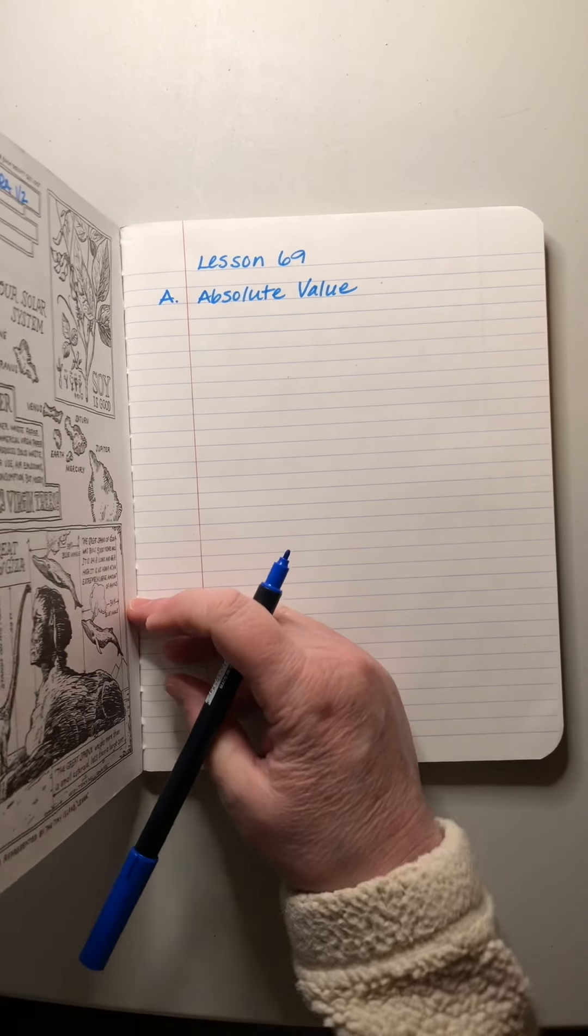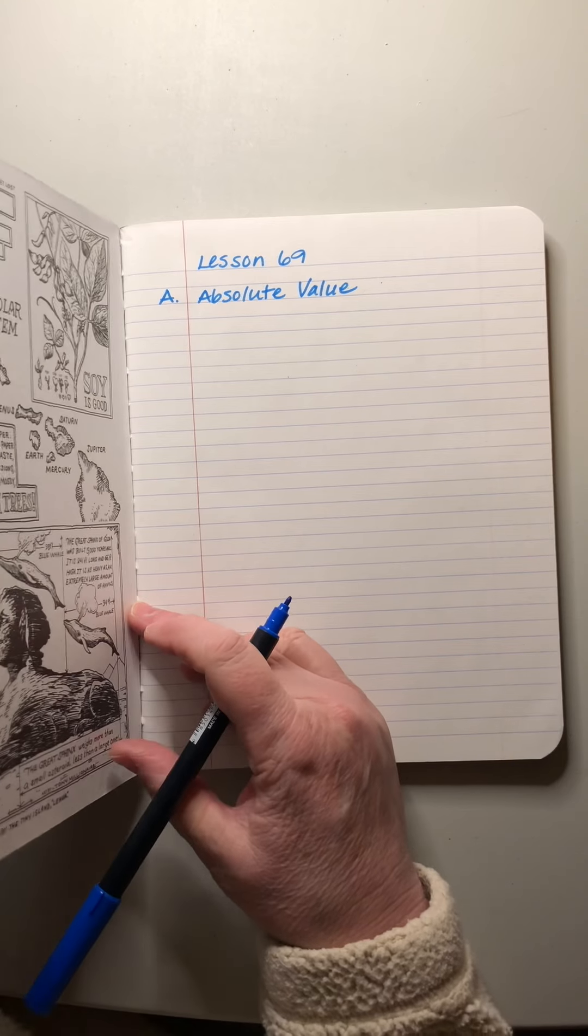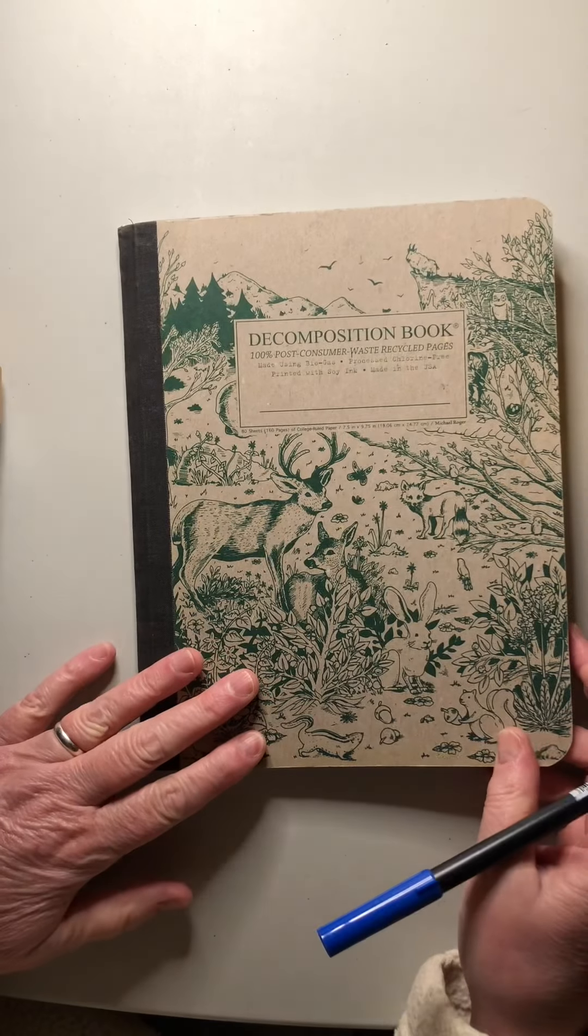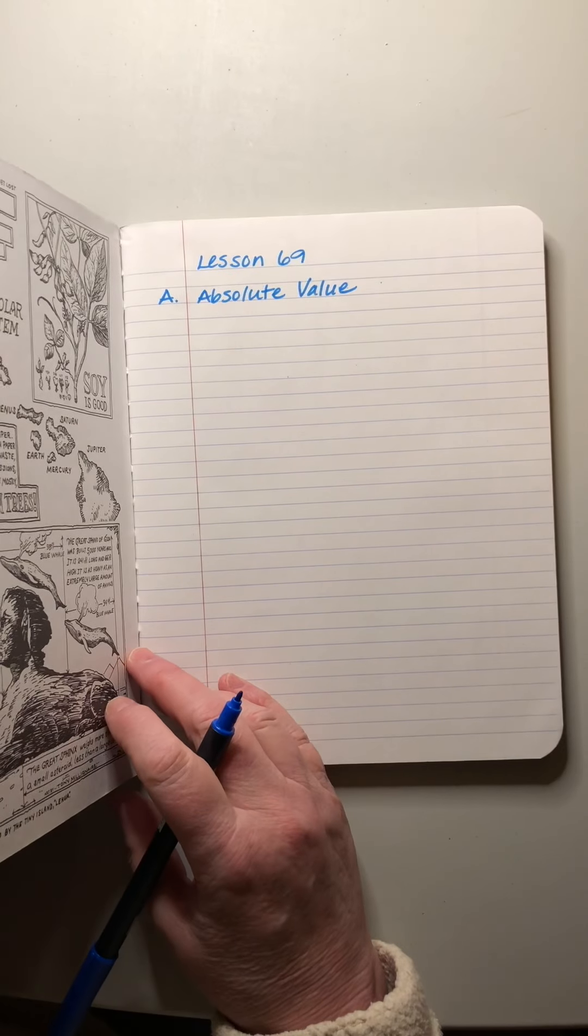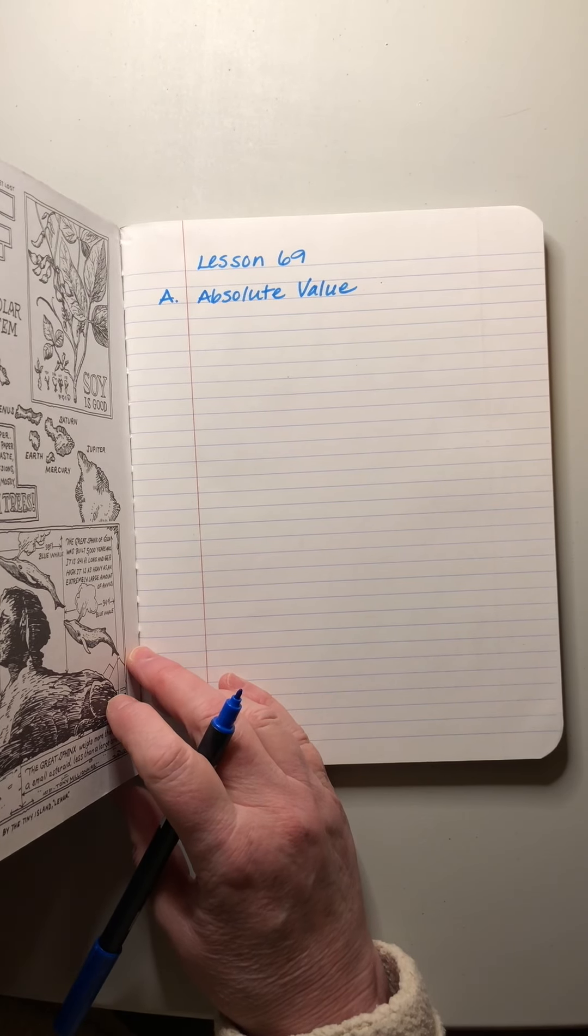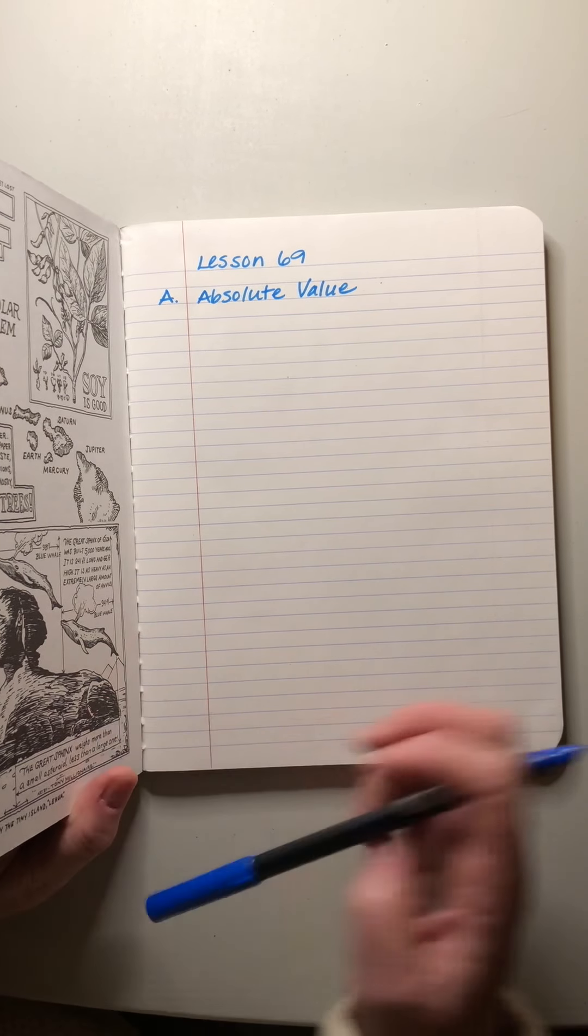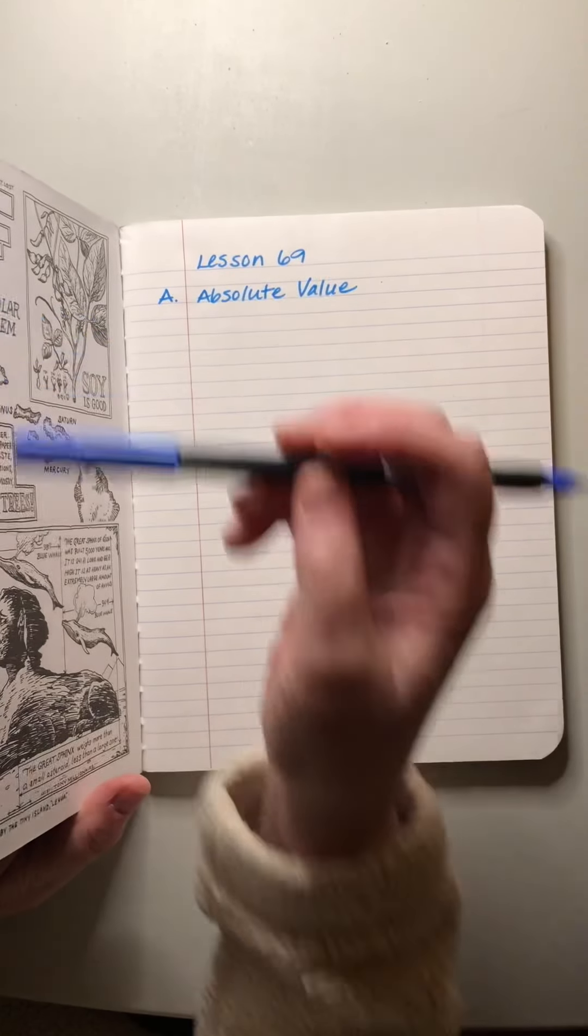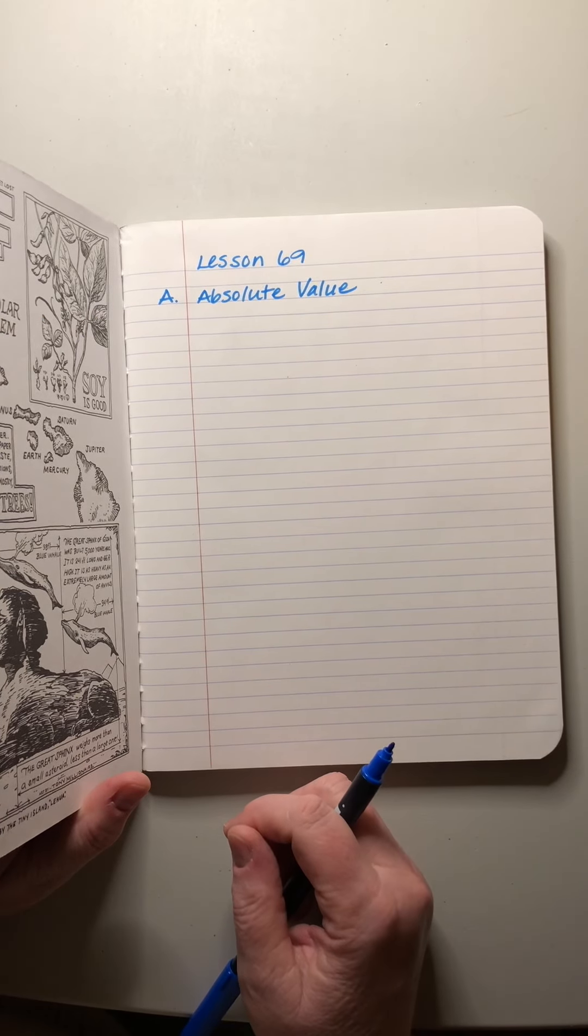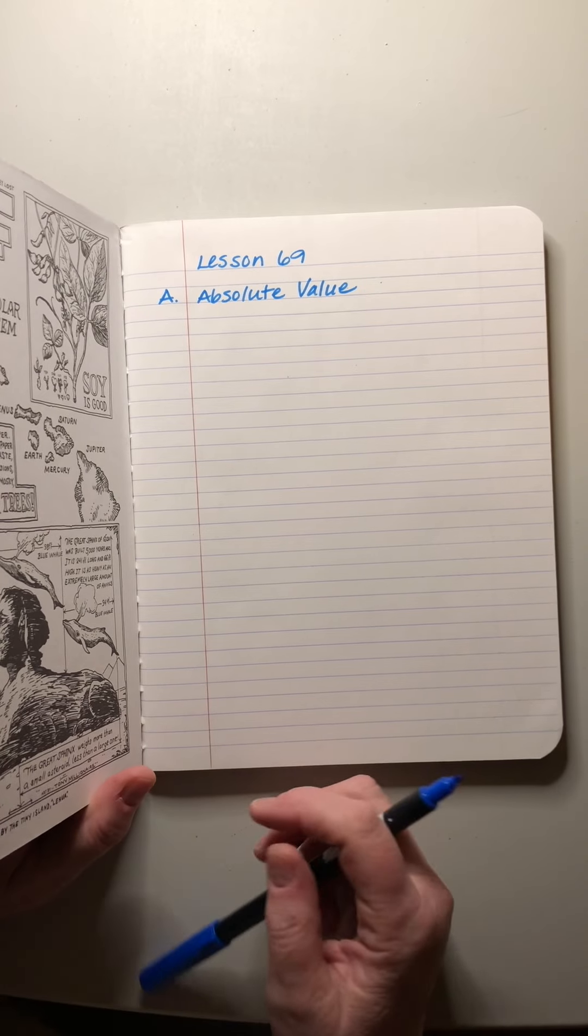Saxon Algebra 1 half, lesson 69. Students, we have a new notebook. It looks like this on the front. I have a whole bunch of these that I bought because I thought they were really cool notebooks and then I realized they don't really work very well for filming because I can't lay the cover all the way down flat. But you know what? I'm just going to use them anyway and we'll be fine.